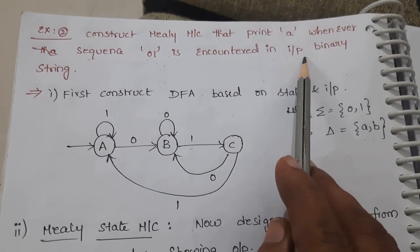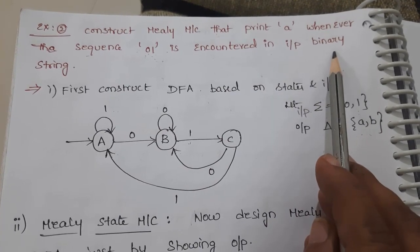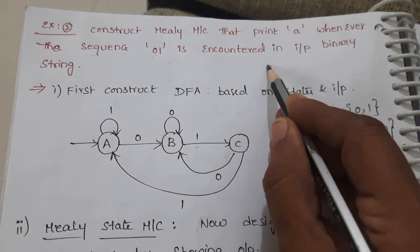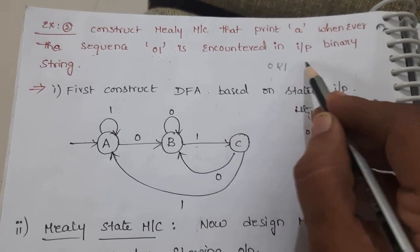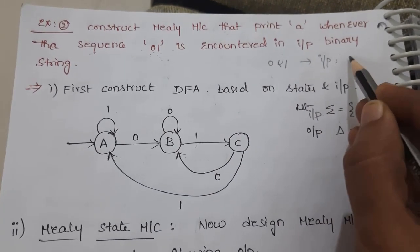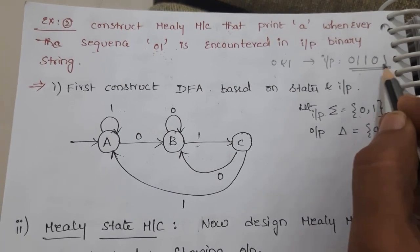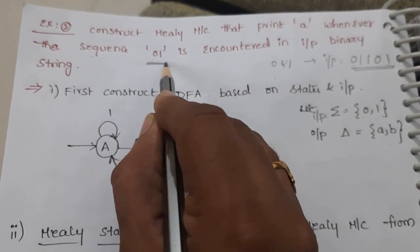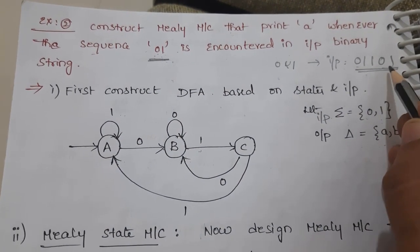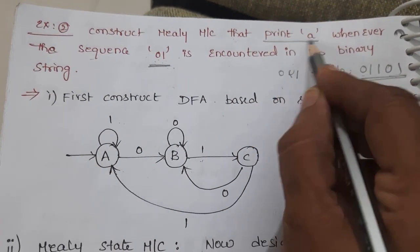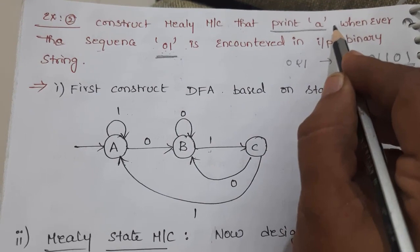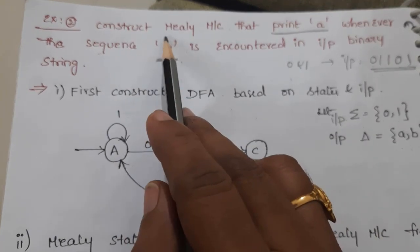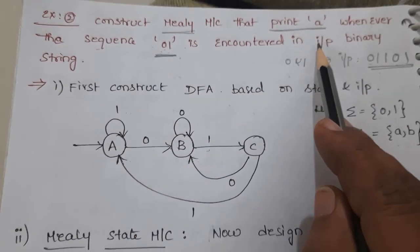First, try to understand the problem. If the input is a binary string, the input data will be in the form of zeros and ones only. So if we have an input like 0, 1, 1, 0, 1, whenever 01 is encountered anywhere in the sequence, then it should print the letter A. We need to construct a finite state machine — a Mealy machine — to achieve this objective.